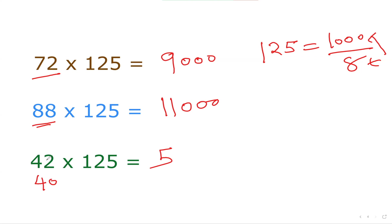Then 42 and 40, what is the difference? 2. Whatever is the difference I'm going to multiply by 125. So 125 times 2 is 250. So my answer is simply 5250. That's cool, isn't it?